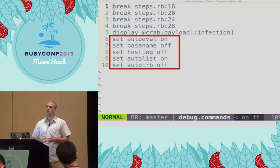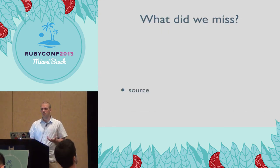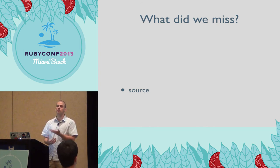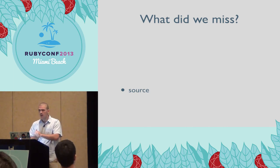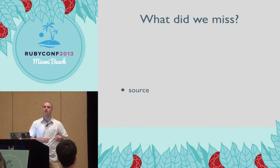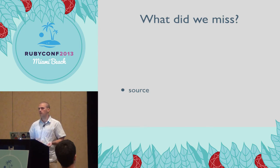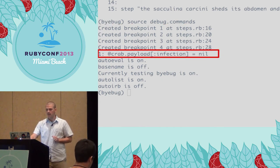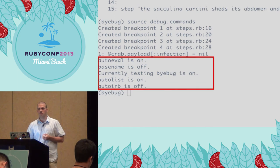Think of save as serializing your debugger session state to a file, and source as deserializing it. This is useful when you've re-established your environment and don't want to re-enter all your breakpoints. You can also pass conditionals into break commands — for example, if you have a loop iterating thousands of times, you don't want to hit the breakpoint 999 times. Using source restores all breakpoints, display variables, and session variables automatically.